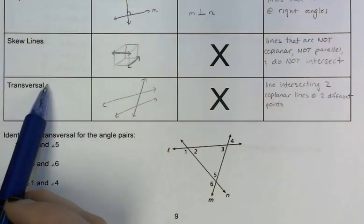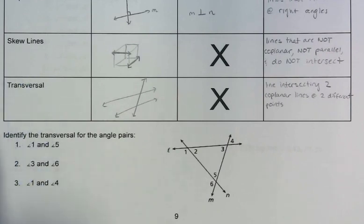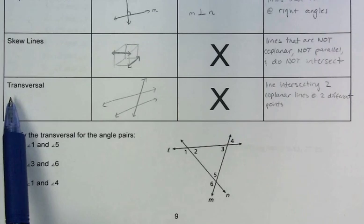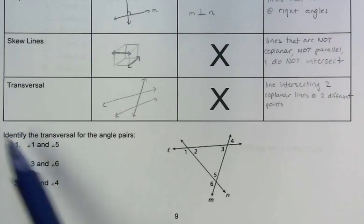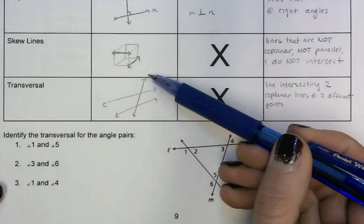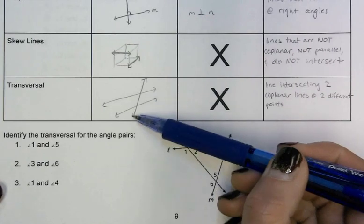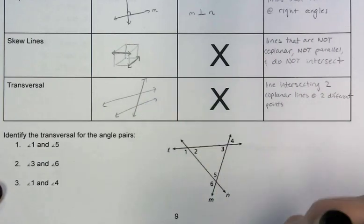We are really focusing on the word transversal, and we're going to use it a lot in our next few sections as well. A transversal is a line that's intersecting two other lines at two different points. In this picture I've got two lines, and this one is the transversal because it's intersecting those two at two different points.